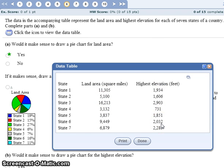Now, highest elevation, it does not make sense to use a pie chart. It has a totally different nature than land area does. Here for land area, if you add these all together, you get the total land area for the whole country.